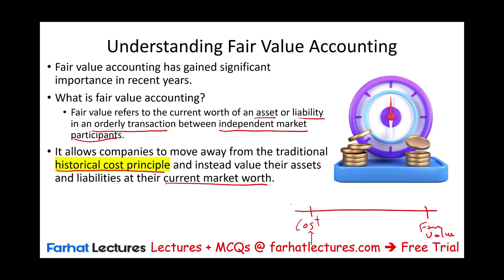Historically, we looked at historical cost. When we buy an asset or acquire a liability, it's recorded at cost. What's happening now is we report those assets and liabilities at how much they are worth today. There are many methods in between, but the two extremes are cost and fair value.